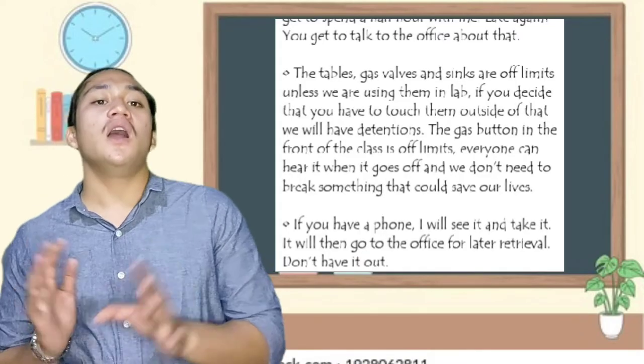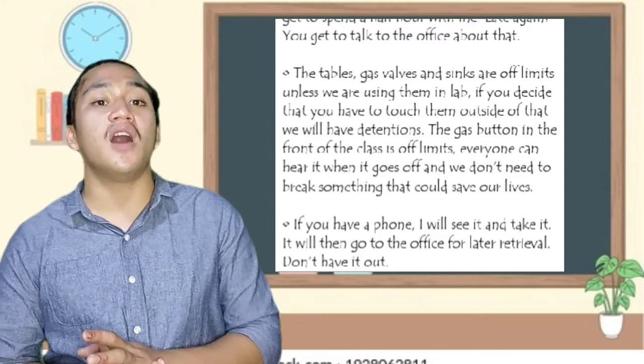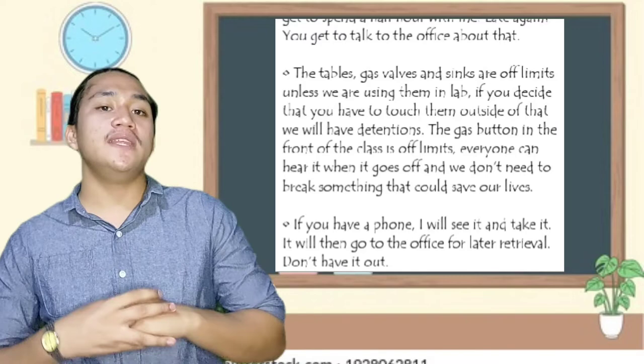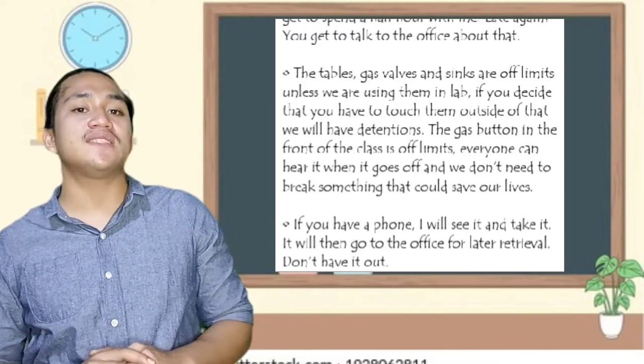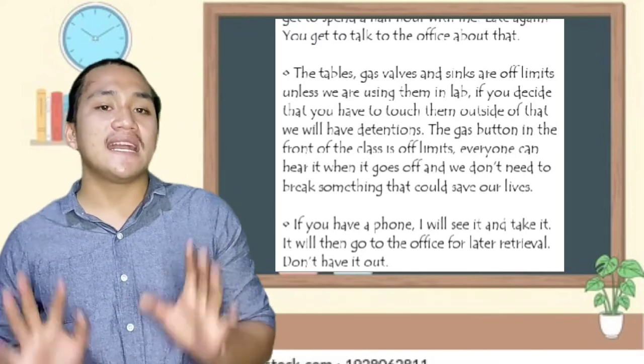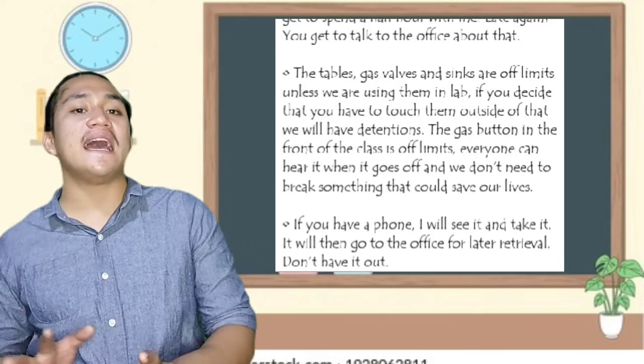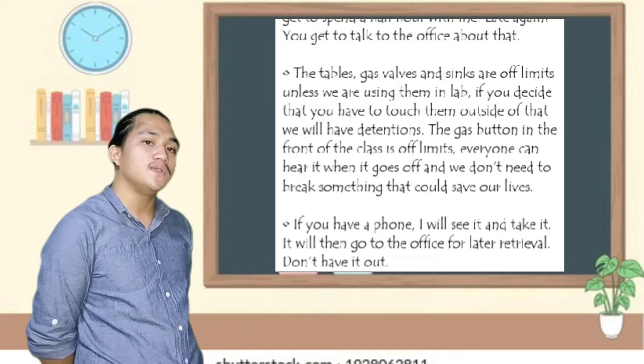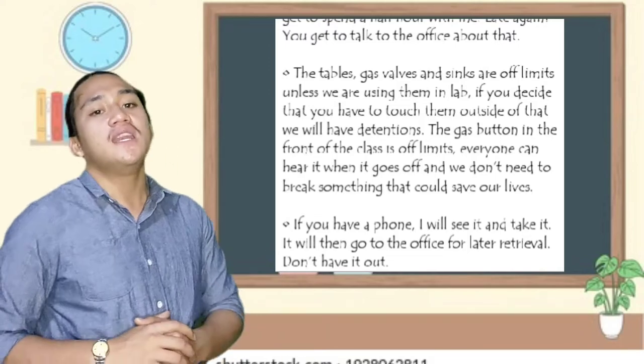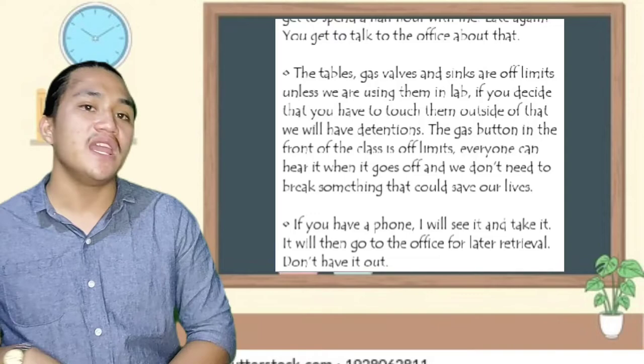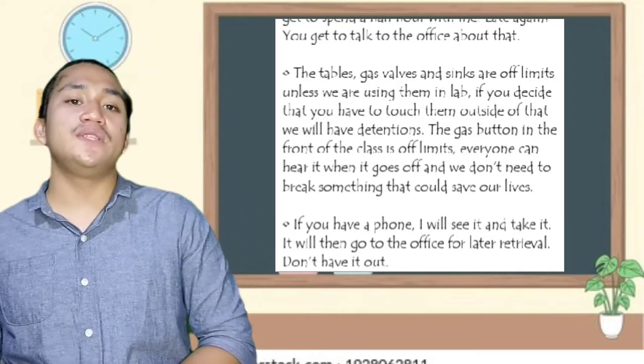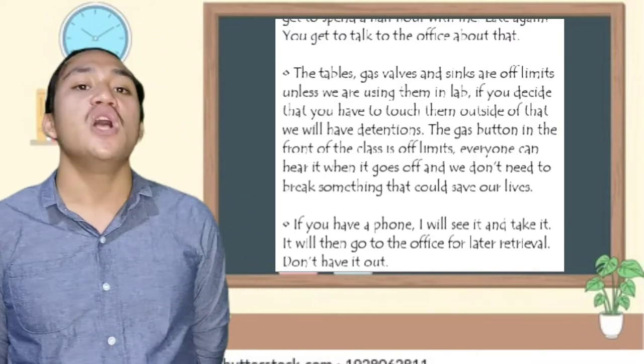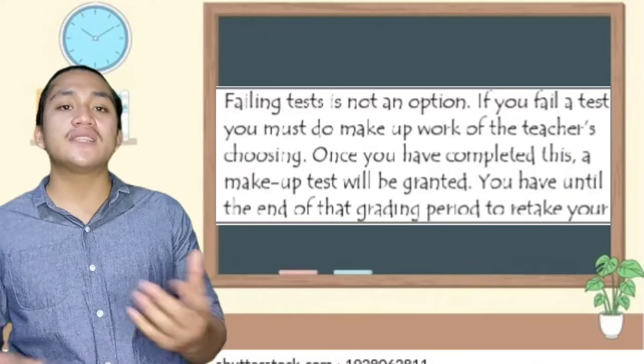The tables, gas valves, and sink are off limits unless we are using them in lab. If you decide that you have to touch them outside of that, we will have detentions. The gas button in the front of the class is off limits. Everyone can hear it when it goes off, and we don't need to break something that could save our lives. If you have a phone, I will see it and take it, and it will then go to the office for later retrieval.